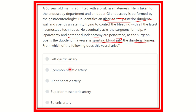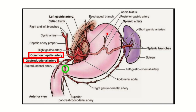The options are: left gastric artery, common hepatic artery, right hepatic artery, superior mesenteric artery, and splenic artery. Now, let's consider the posterior wall of the first part of the duodenum. We need to find out which blood vessel runs behind the posterior wall of the first part of the duodenum, and determine from which artery it arises.